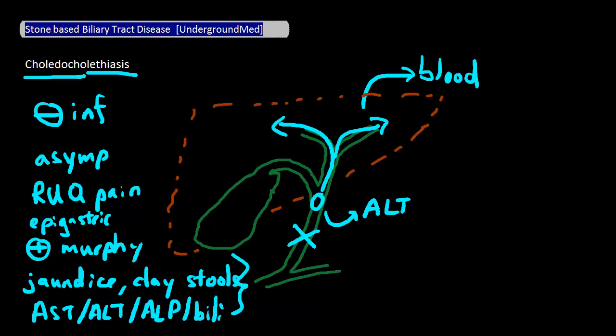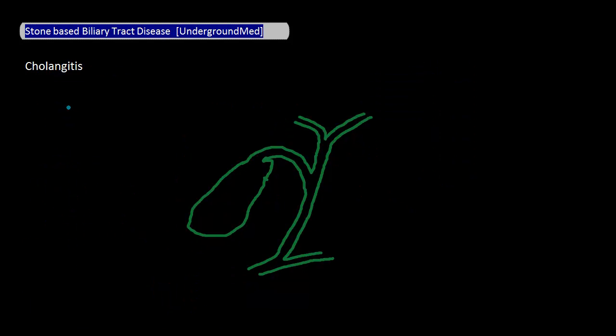The last one we'll talk about is cholangitis, which is really just a progression of infection on top of choledocholithiasis. So there's a stone obstructing the common bile duct, and an infection is brewing around that area.